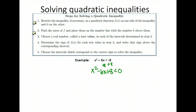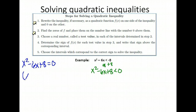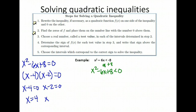Find the zeros of f and place them on a number line. To find the zeros, we're going to pretend we're solving for zero — set it equal to zero to solve it. When you have x squared, you can factor if it factors, or use the quadratic formula if it doesn't. Are there factors of 8 that add to equal negative 6? Negative 4 and negative 2 add to negative 6 and multiply to positive 8. Setting each factor equal to zero, I get x = 4 and x = 2.